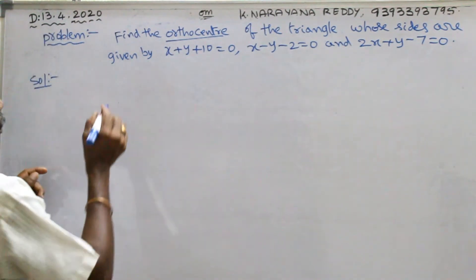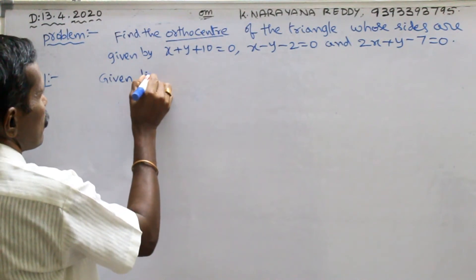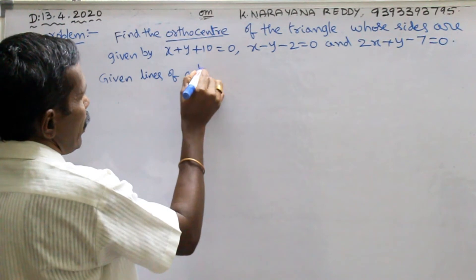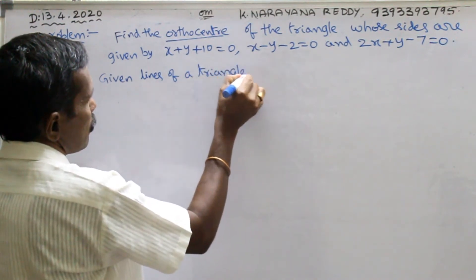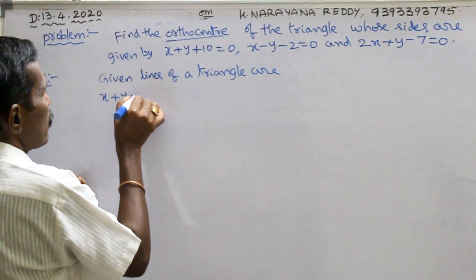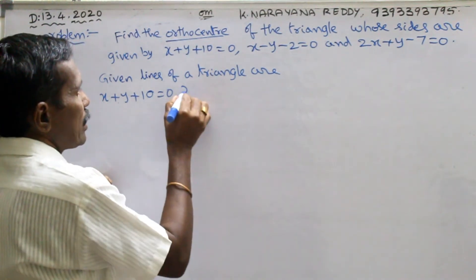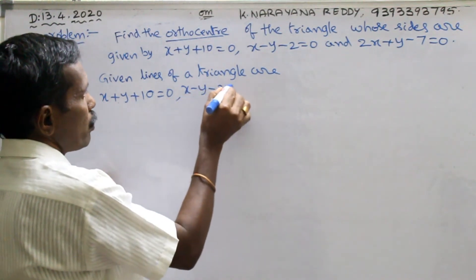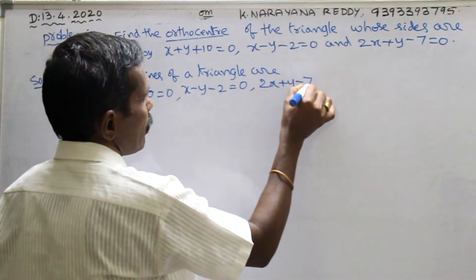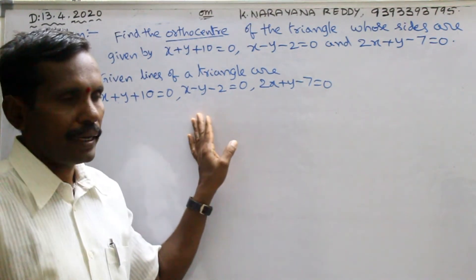The given lines of a triangle are: x plus y plus 10 equals to 0, x minus y minus 2 equals to 0, and 3x plus y minus 7 equals to 0. These are the three sides of a triangle.